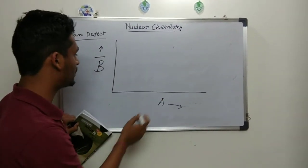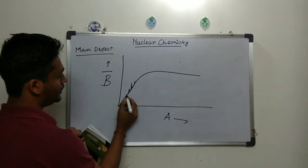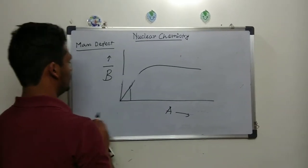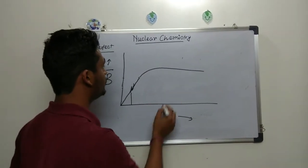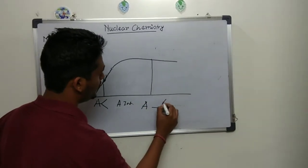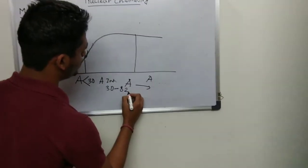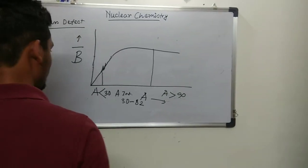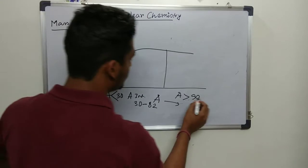Now there is a curve of binding energy per nucleon (v-bar) versus mass number A. If we draw this curve, it looks like a broad peak. There are some spikes at certain points. We can divide this graph into three regions: a low mass region (A less than 30), an intermediate region (A from 30 to about 90), and a high mass region (A greater than 90).